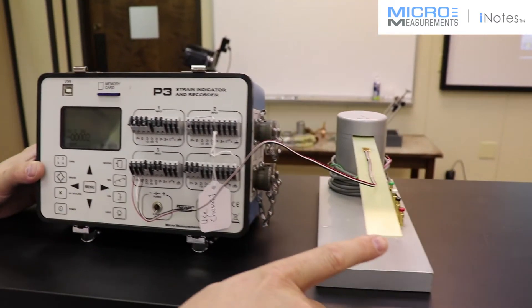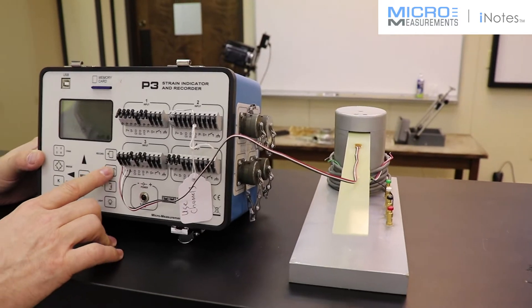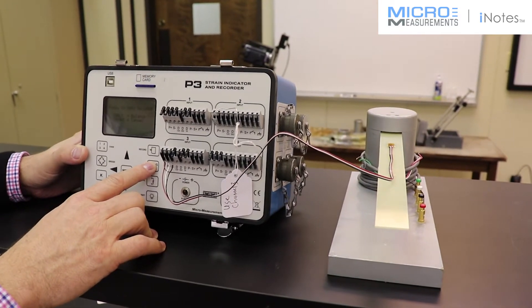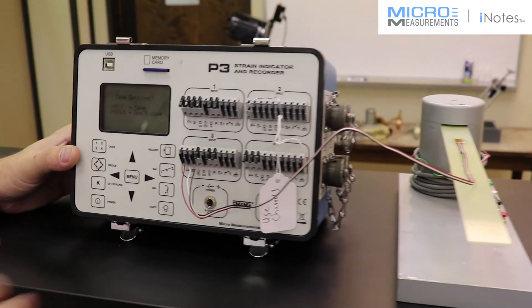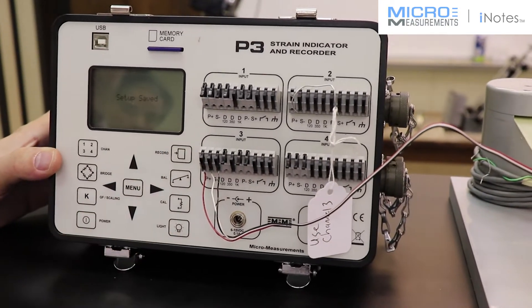We've got a very small offset, so we'll just click on balance. That will zero it out and save it.